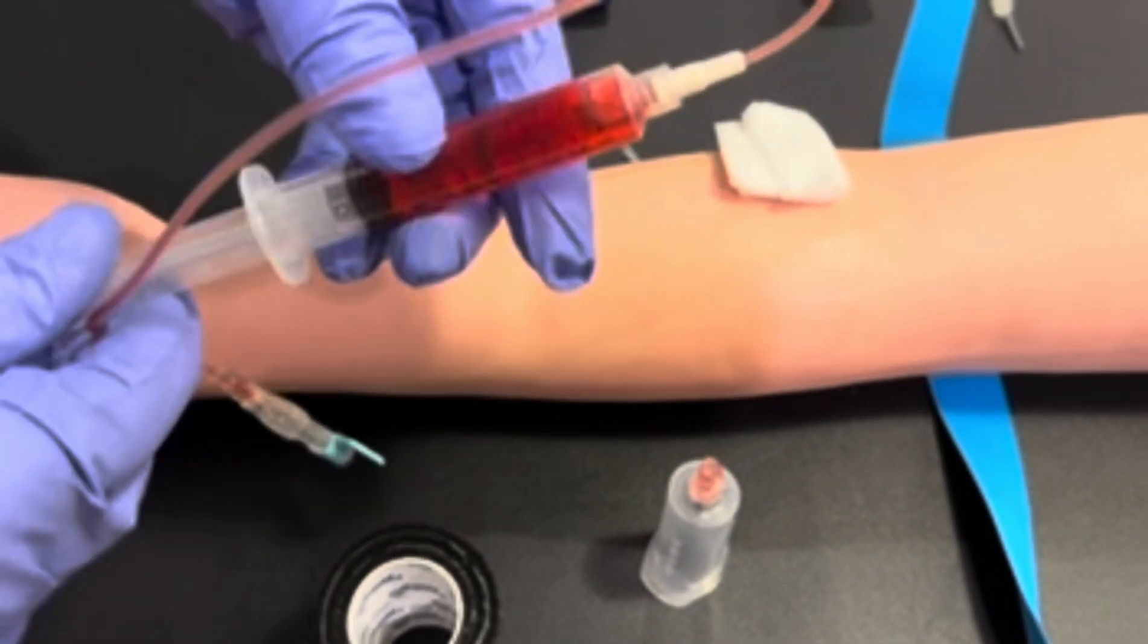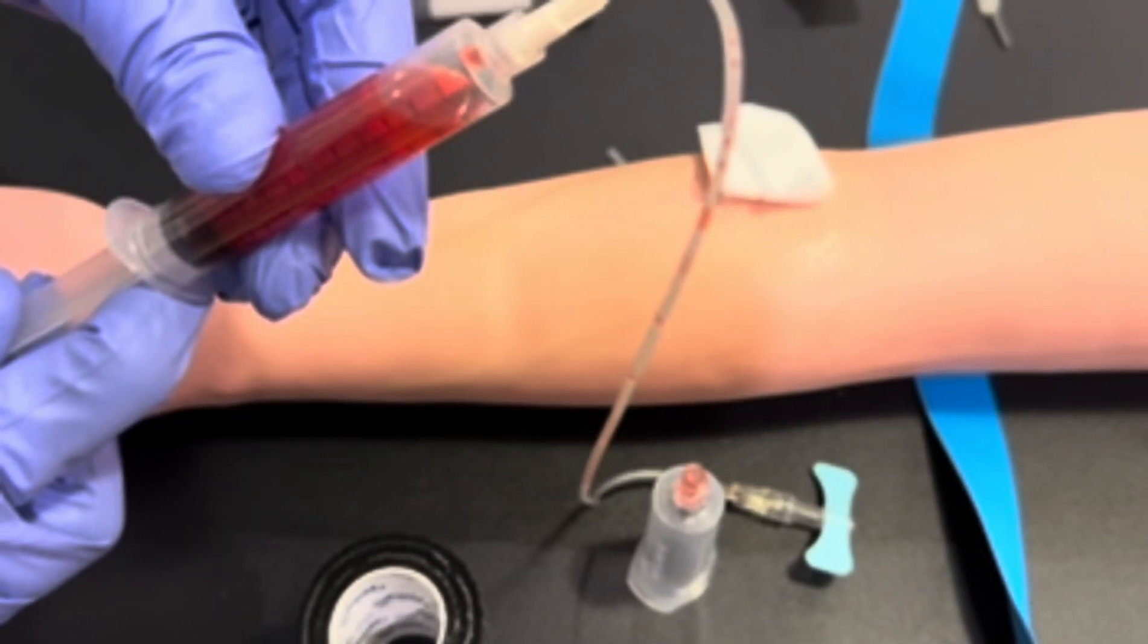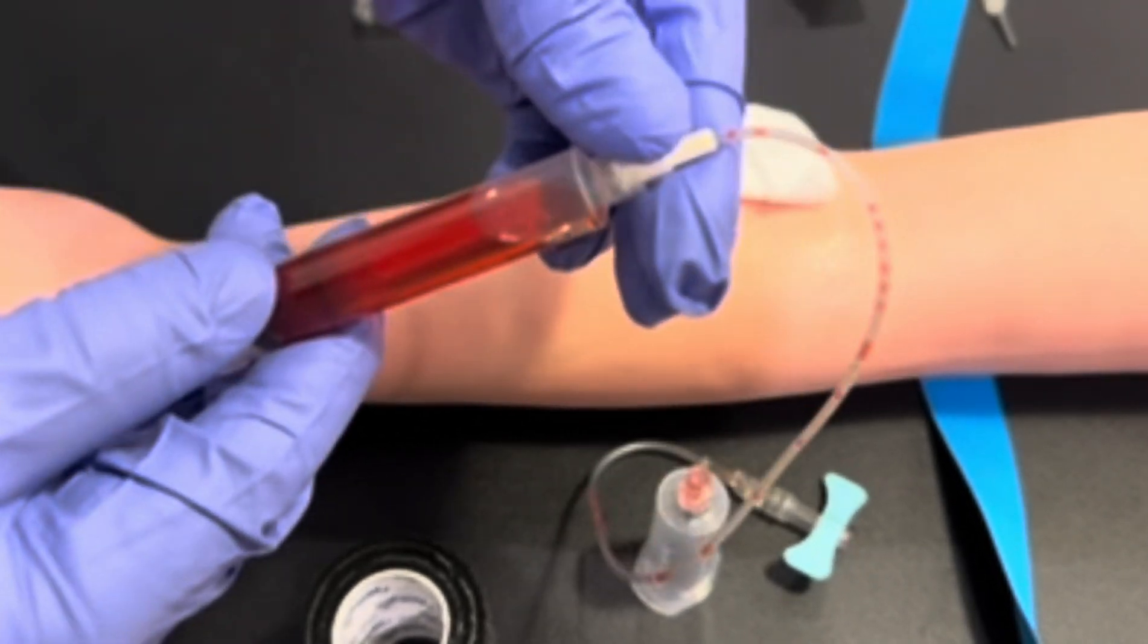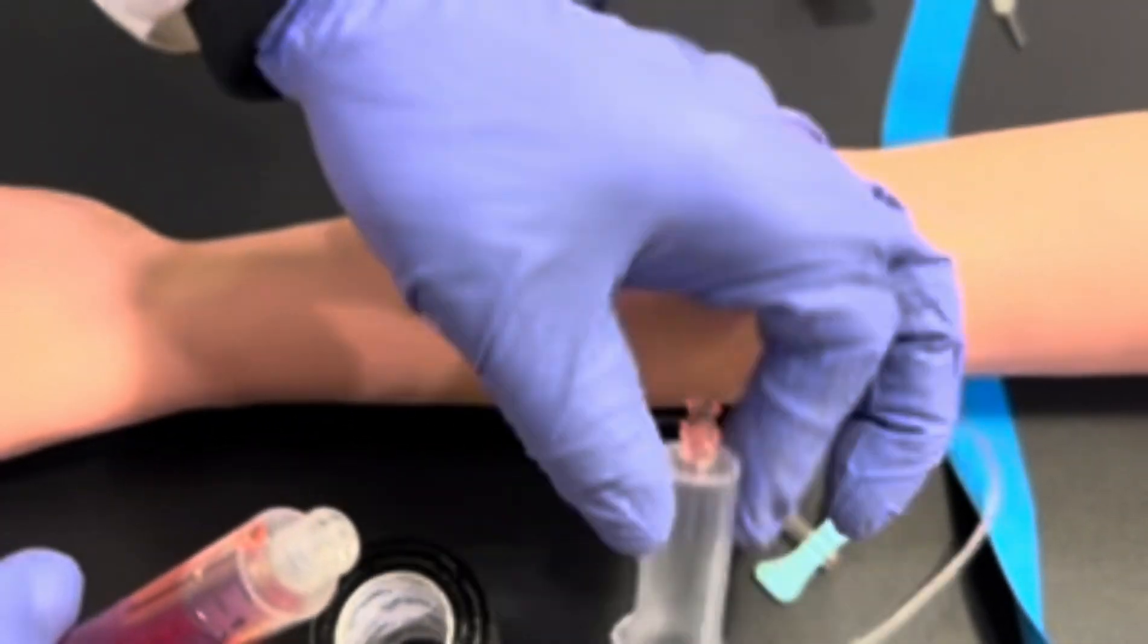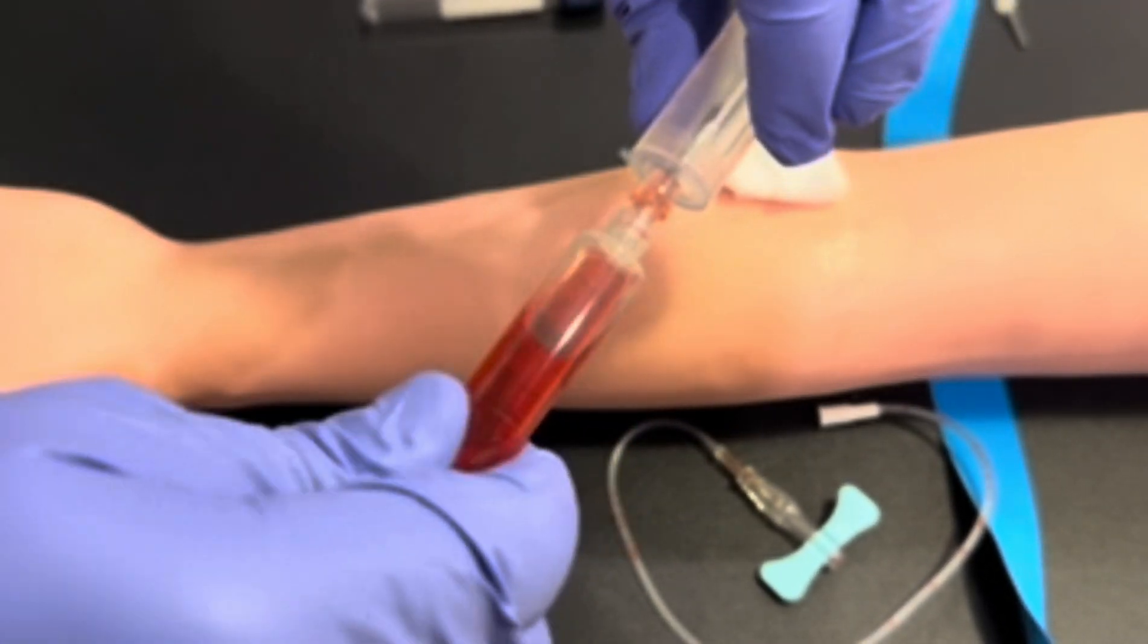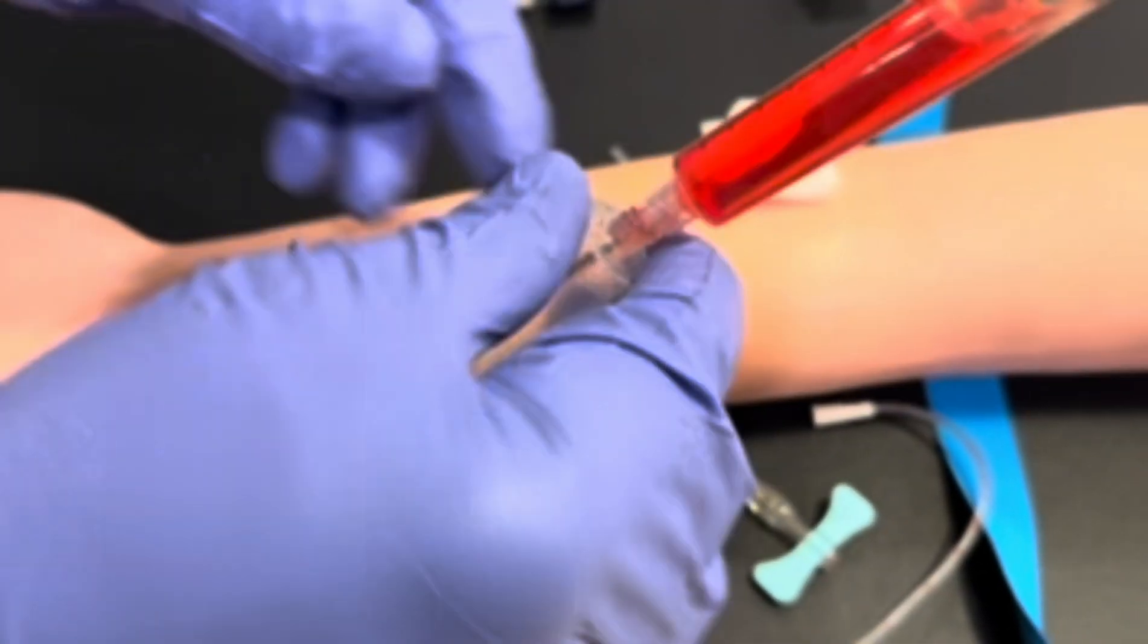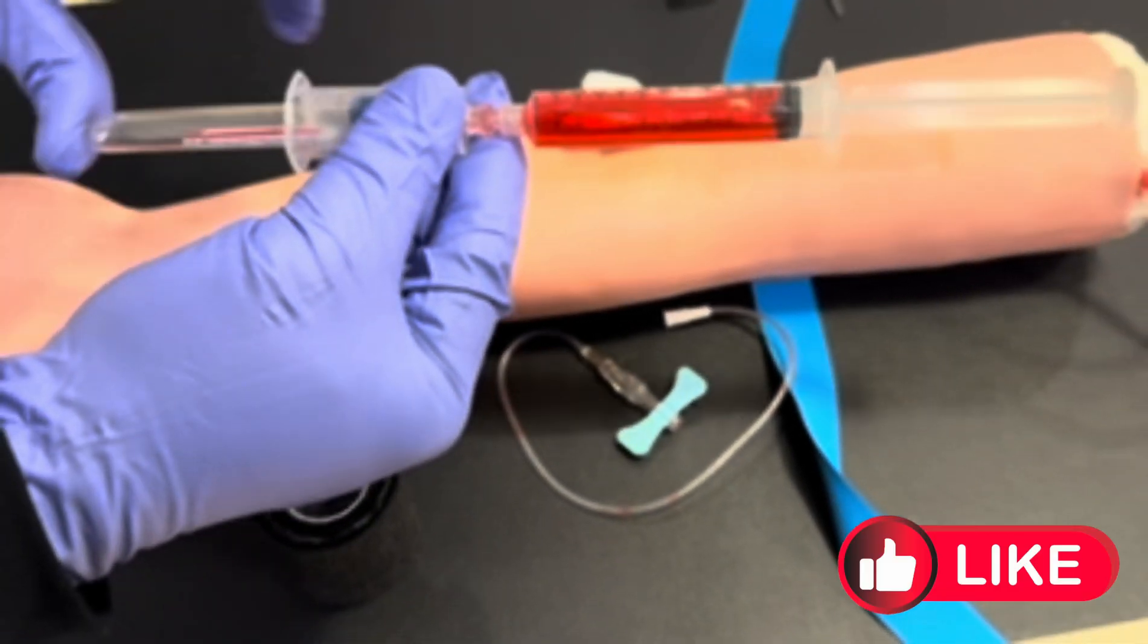Disconnect the butterfly from the syringe device and attach the syringe to the transfer device, so you can safely transfer your blood from the syringe into each respective vacutainer tube.